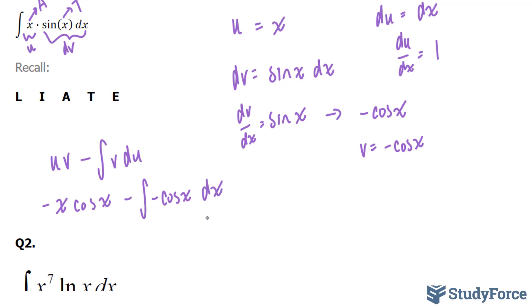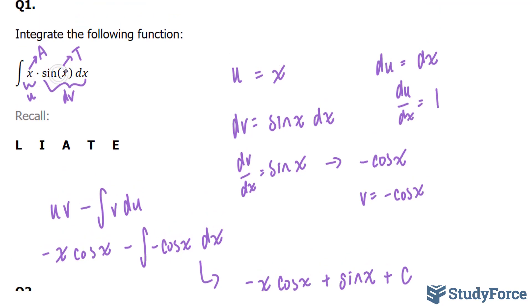Next, I'll cancel out these two negatives, where I end up with negative x cosine x plus the integral of cosine x. Now if you recall, the integral of cosine x is sine x. So we're going to put plus sine x plus c. There you have it. That right there is the integral of this function.